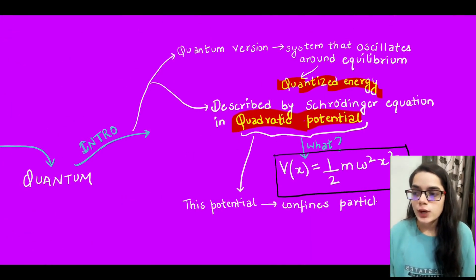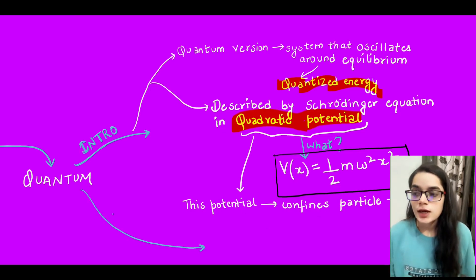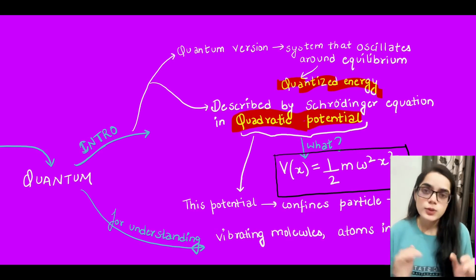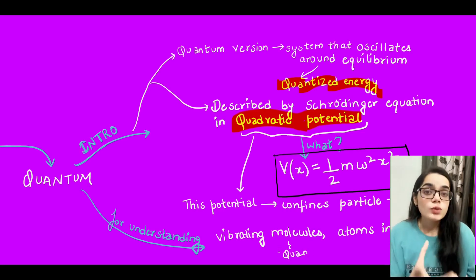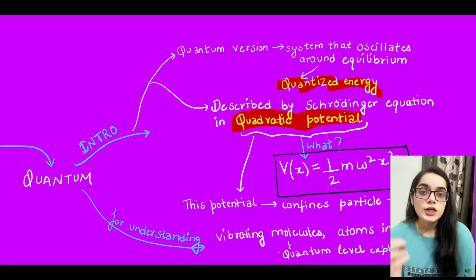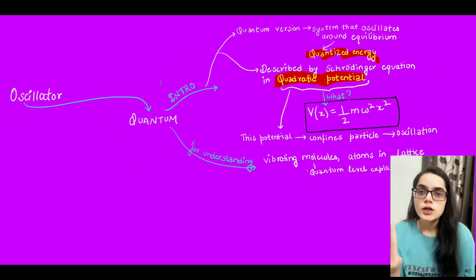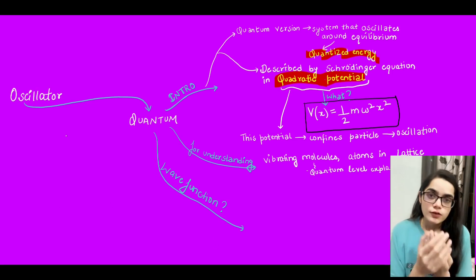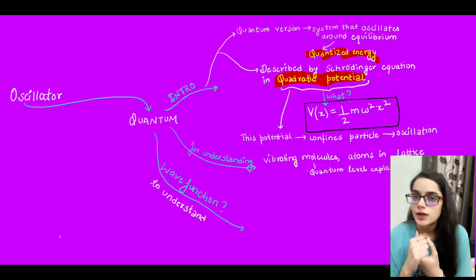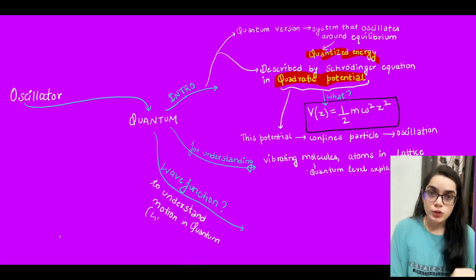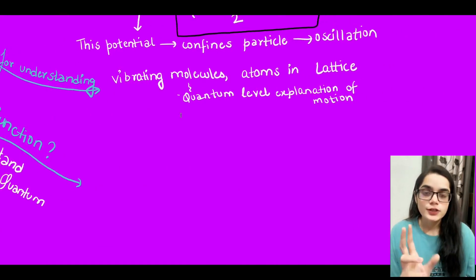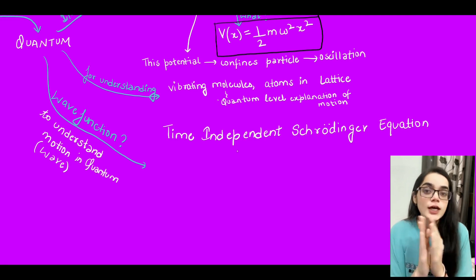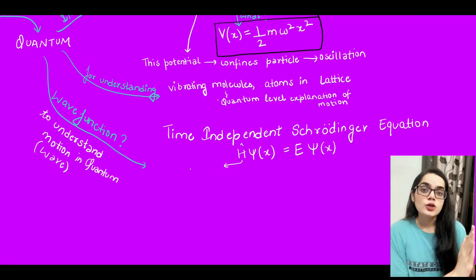The quantum harmonic oscillator helps us study vibrating molecules, atoms, and lattices — it gives a quantum-level explanation of motion. To understand the quantum system's motion, we use the Schrödinger equation, from which we obtain wave functions and energy eigenvalues. Starting with the time-independent Schrödinger equation, it begins with the Hamiltonian operator. When the Hamiltonian operator acts on the wave function, it gives us the energy eigenvalues and the eigenfunctions.